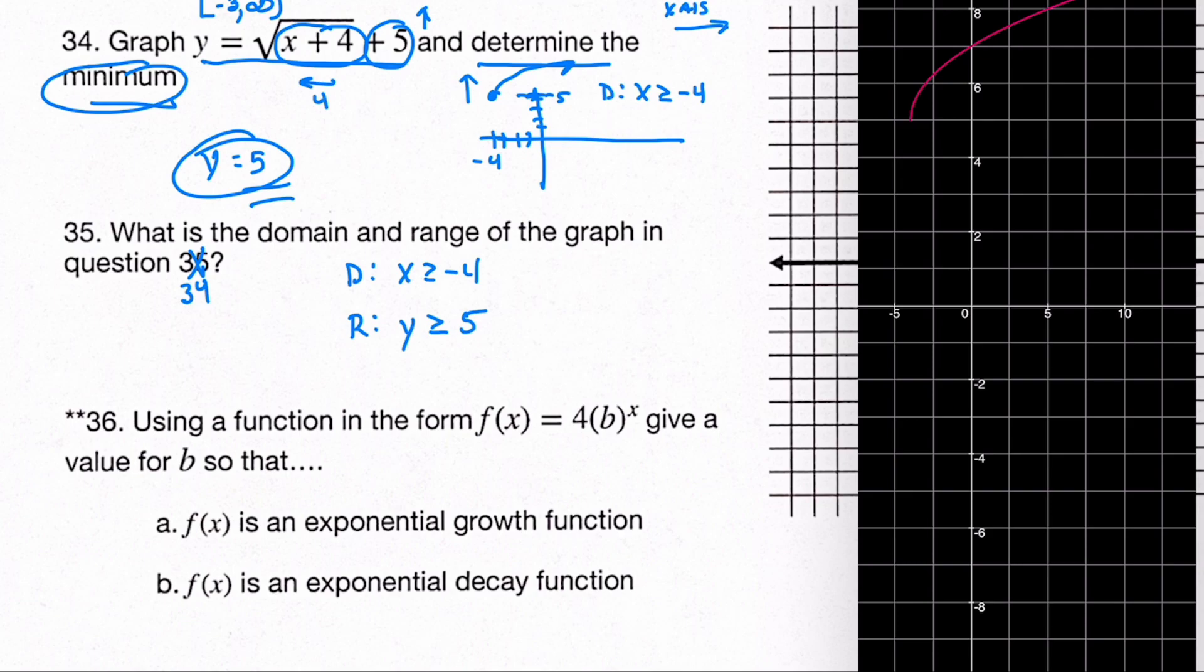Where does it head? And the y values, where do they start and where do they go? In this case, always greater than 5 for the y values.